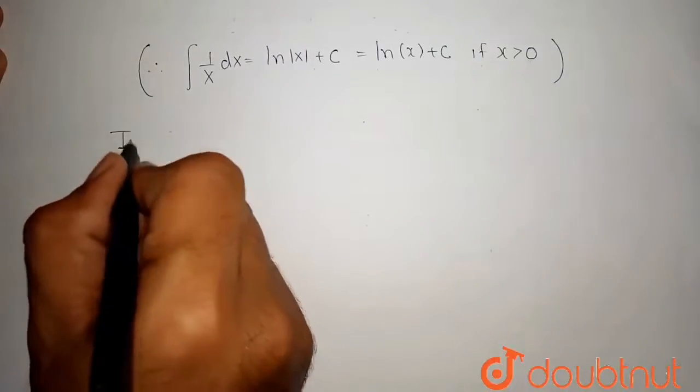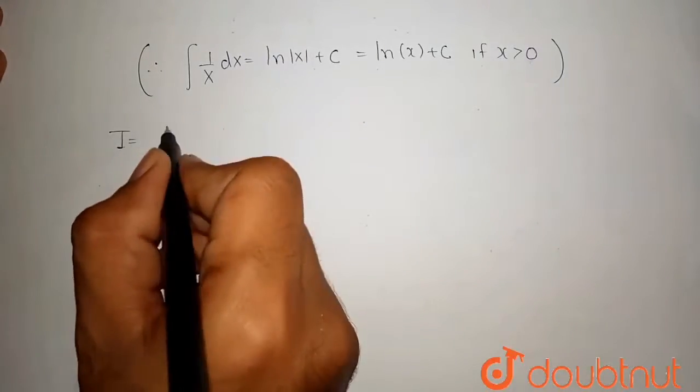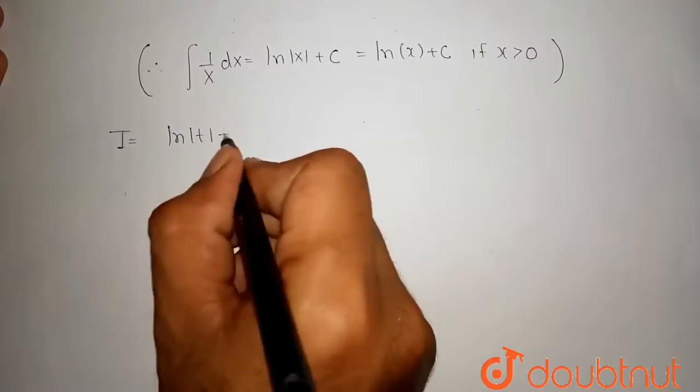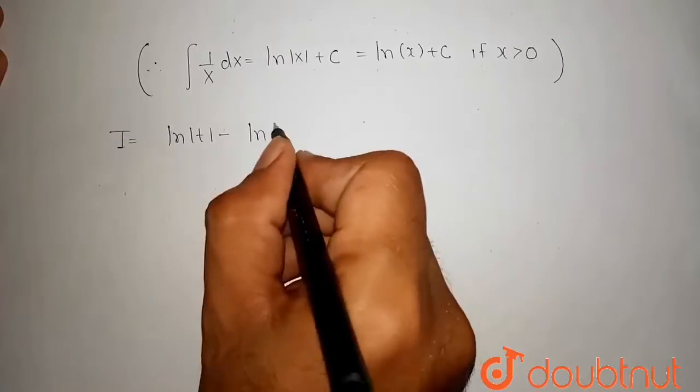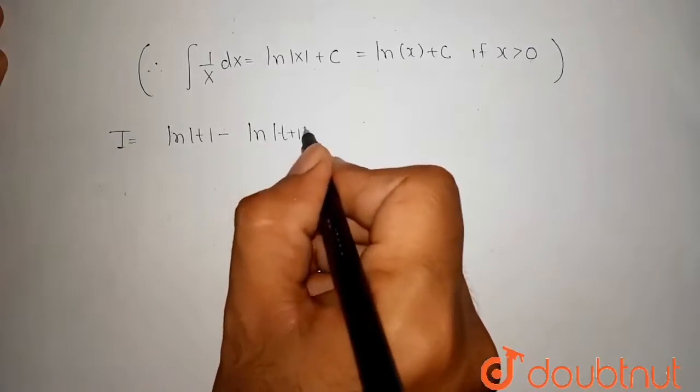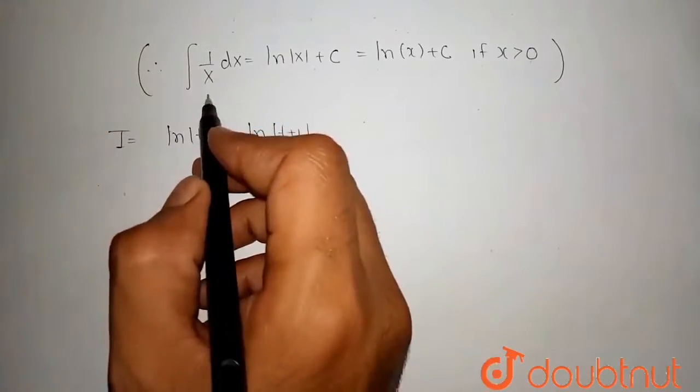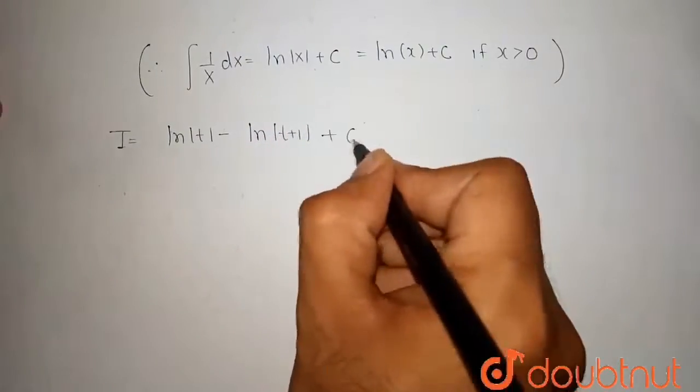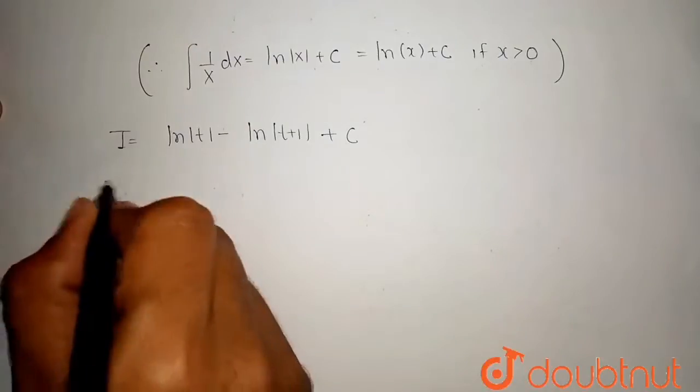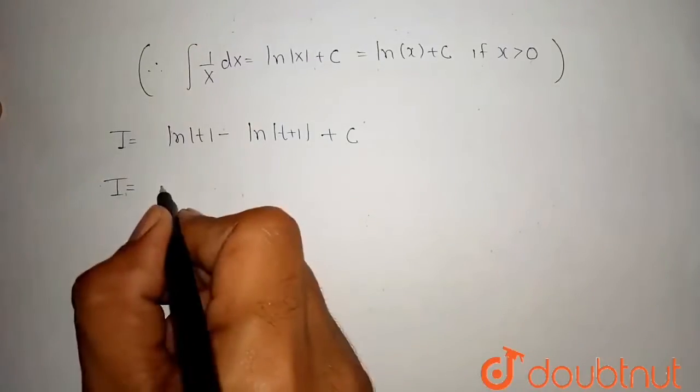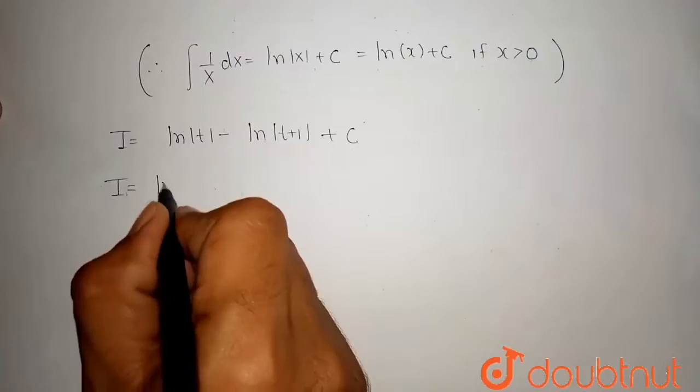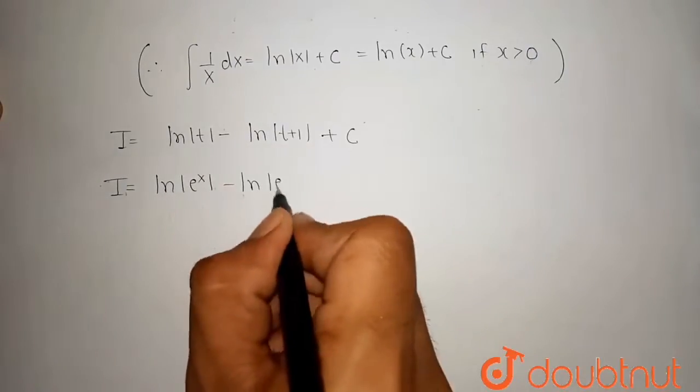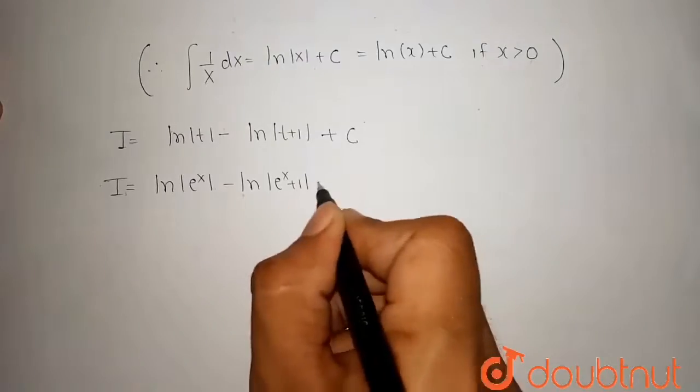So in our case, our integral becomes ln of mod of t minus ln of mod of t plus 1, because the integration of 1 upon x plus 1 is also ln of mod of x plus 1, plus c is our integration constant. After that, I can put our substitution where t is equal to e to the power x. So ln of mod of e to the power x minus ln of mod of e to the power x plus 1 plus c.